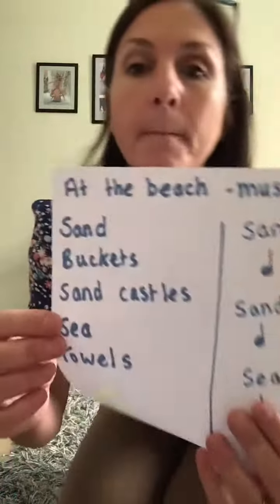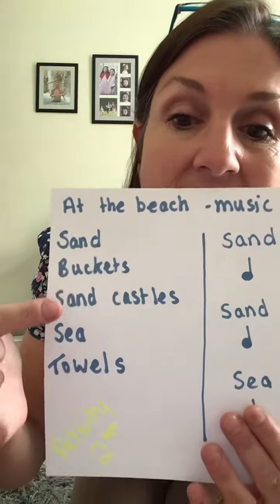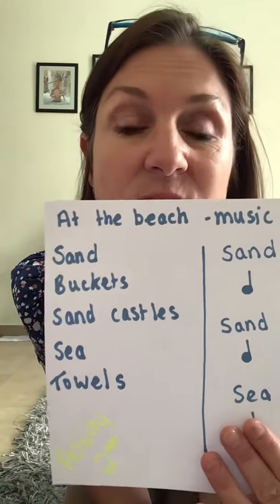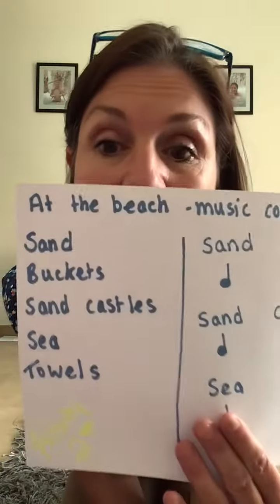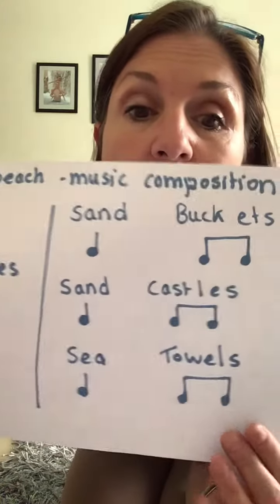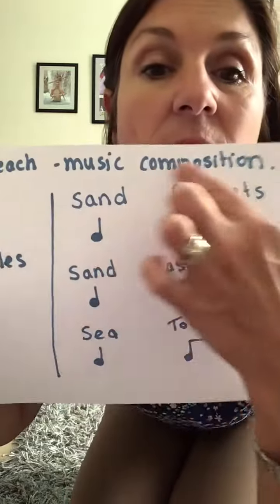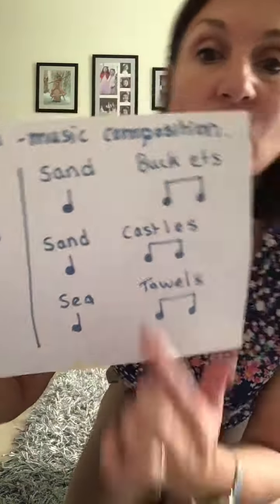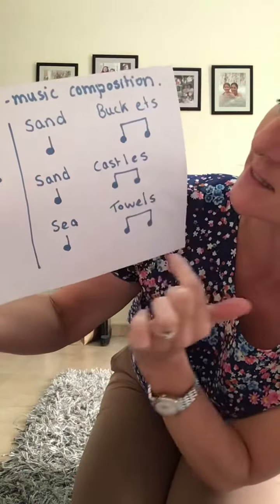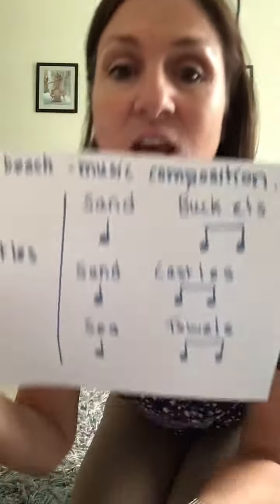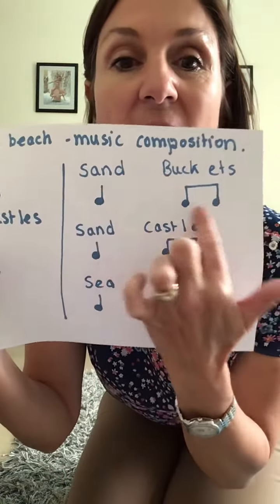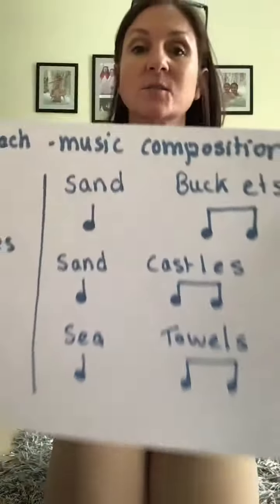I was thinking about the words associated with beach, so I came up with: sand, buckets, sandcastle, sea, and towels. I just came up with those five words — you can come up with four or three, whatever you want to do. Then I took those five words and put them into a little musical composition. You can see I did: sand, buckets, sandcastles, sea, towels. I didn't include any rests — I just did tas and titis.